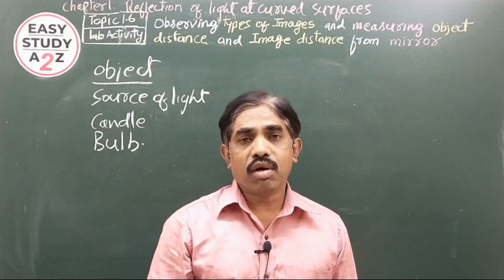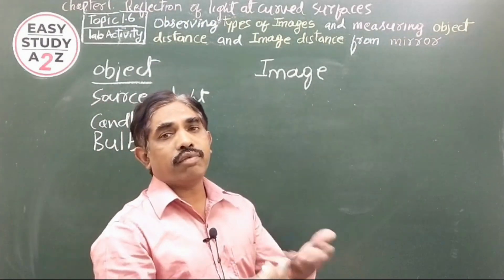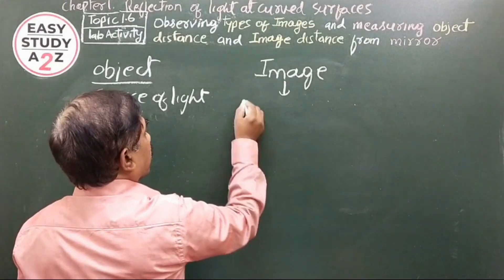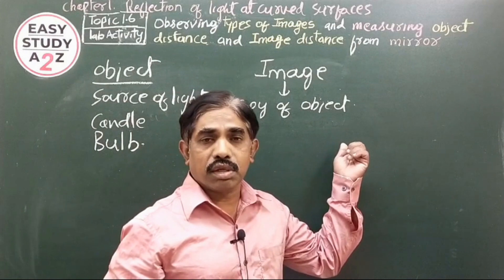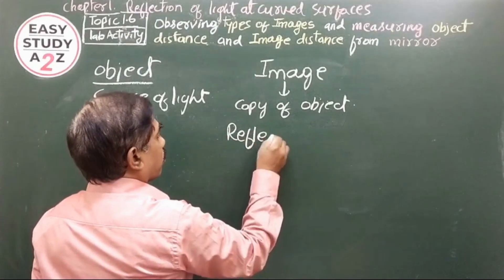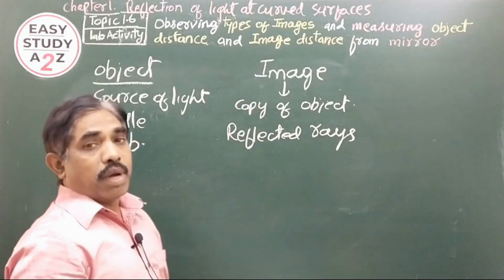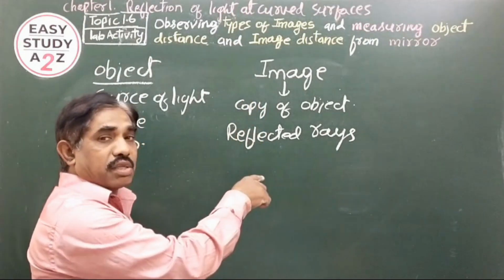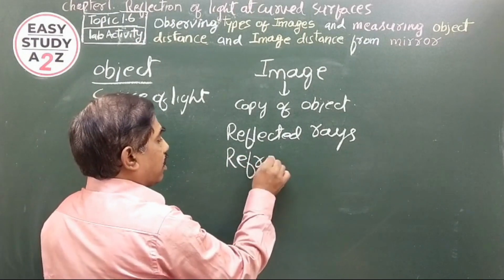An image is a copy of the object — what we see of the same object in the mirror or on the screen. In the case of mirrors, the image is formed by the intersection of reflected rays. When reflected rays meet at a point, we get an image. In the case of lenses, we get an image by the intersection of refracted rays.